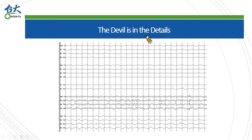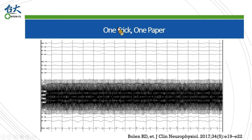We can identify them as artifacts because of their regularity and poor field. This is also a trick — by adjusting the paper speed and the high frequency filter. If we restore the settings, we can see the culprit: they are 60Hz artifacts from the environment. The most important lesson is, if you have novelty and courage, you can have a publication in a great journal.